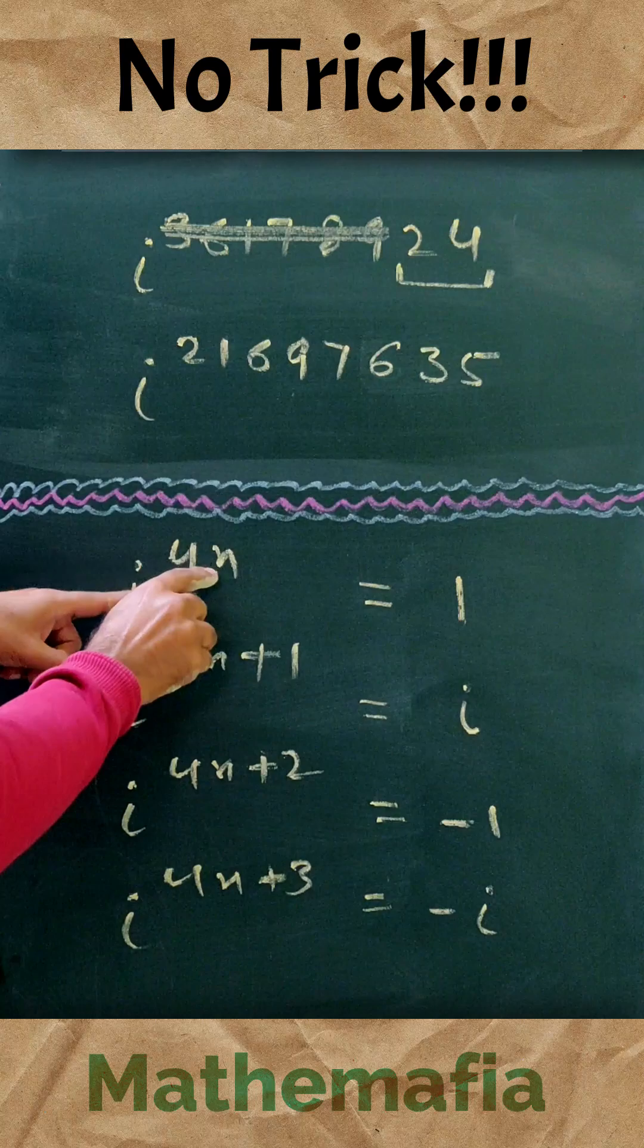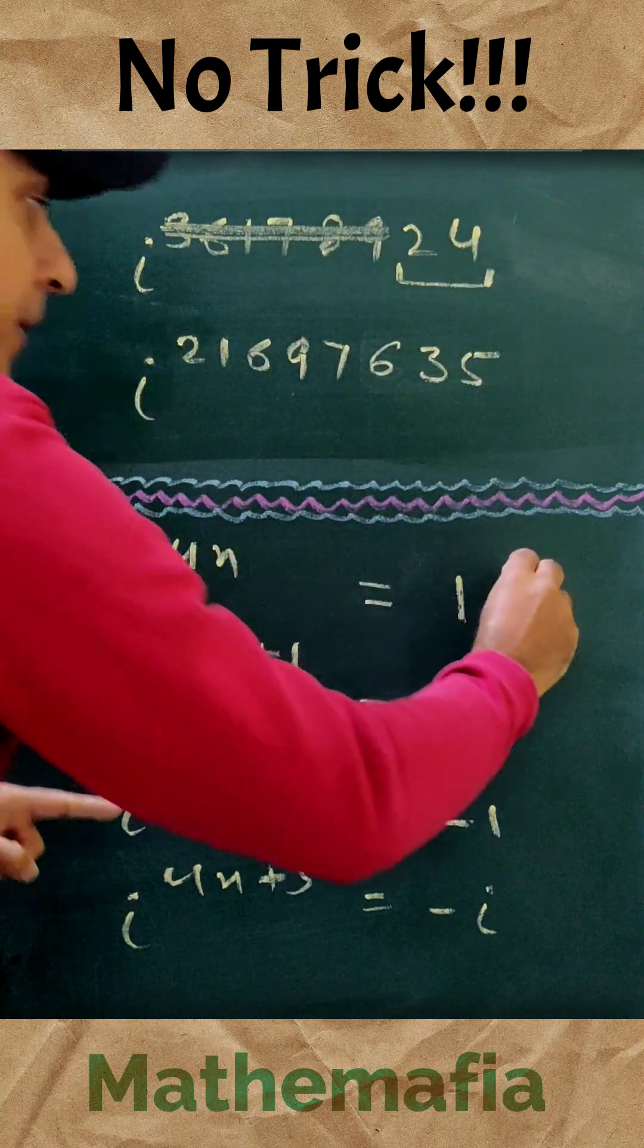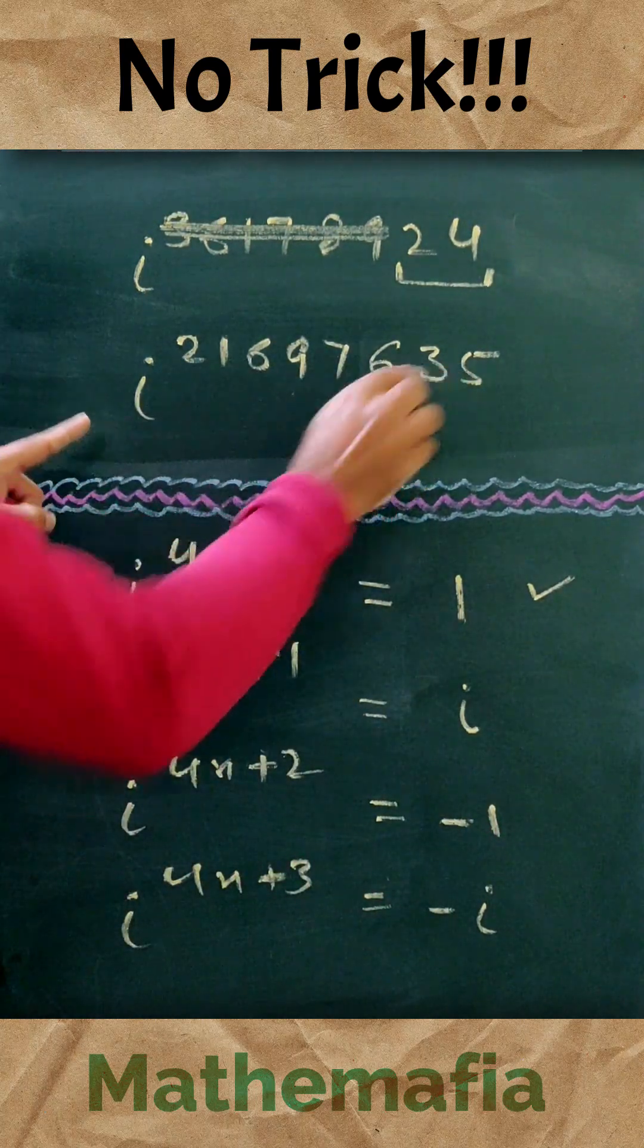Now 24 is of the form 4n, so its value will be 1. Let's talk about this number.